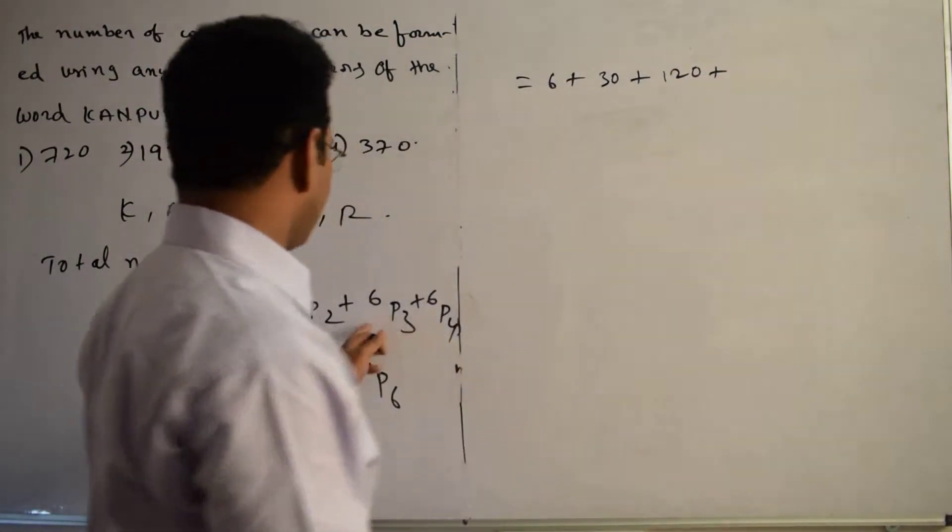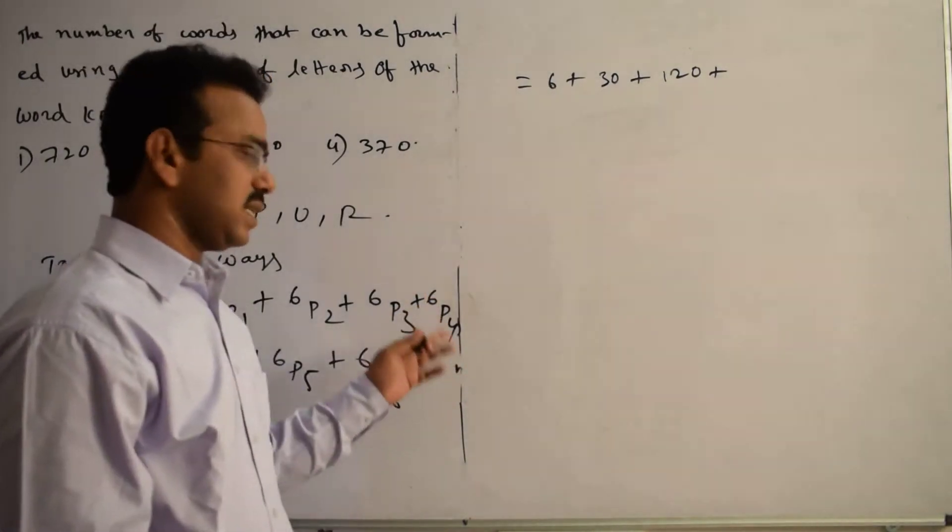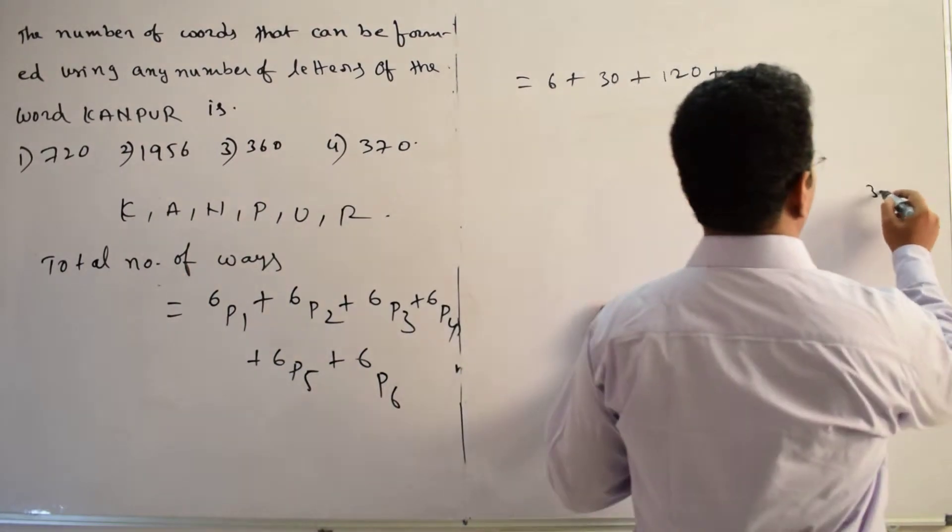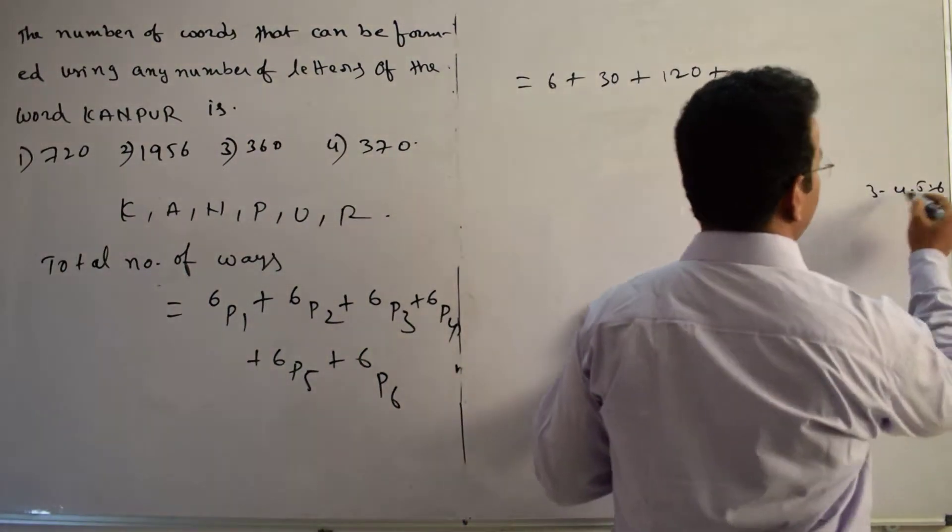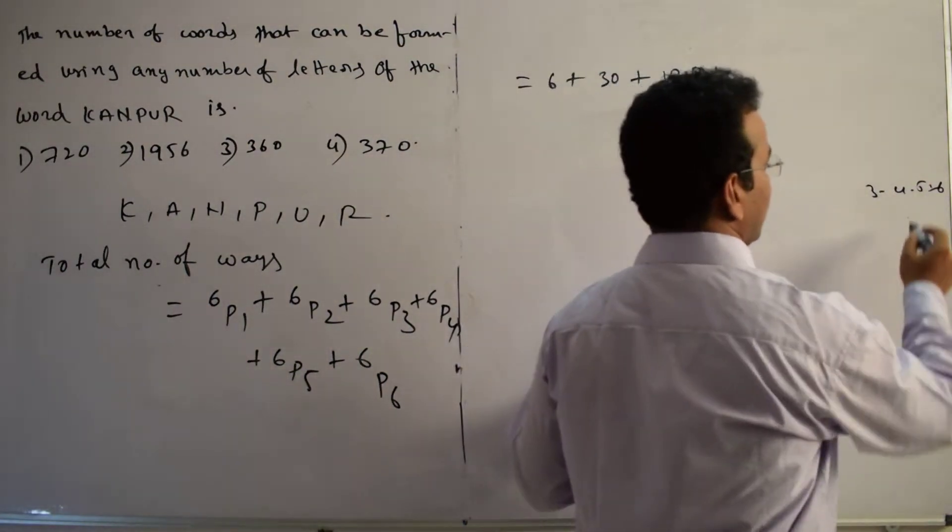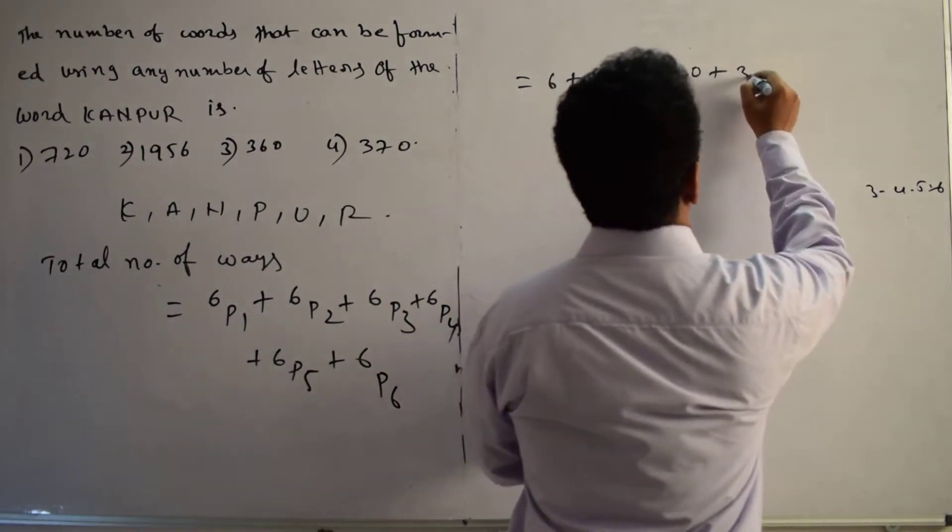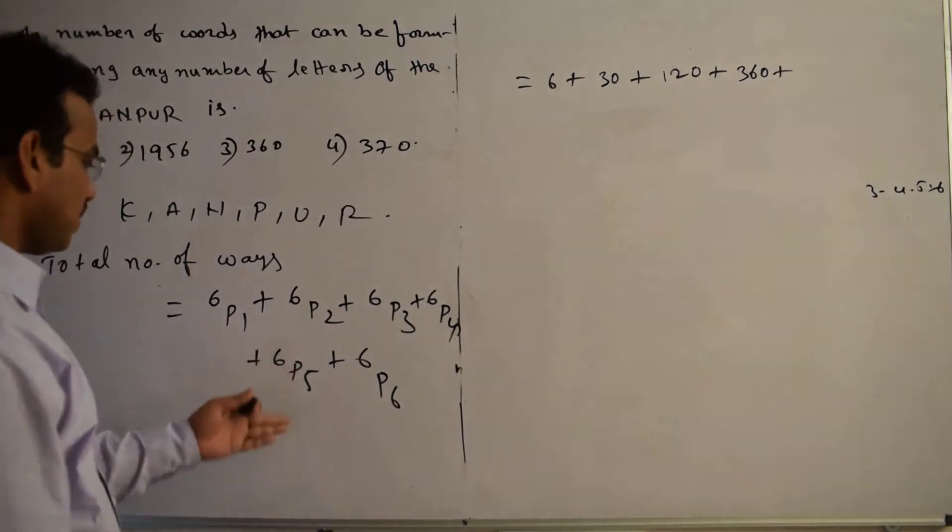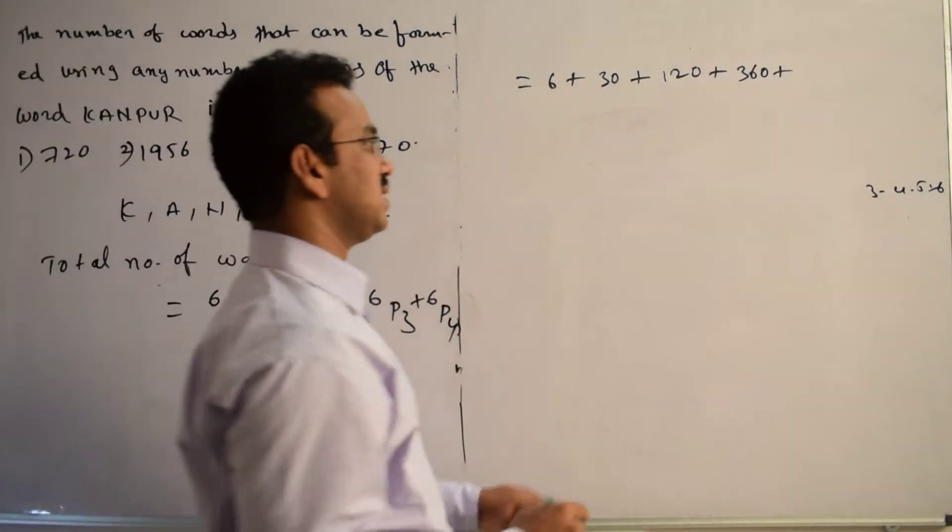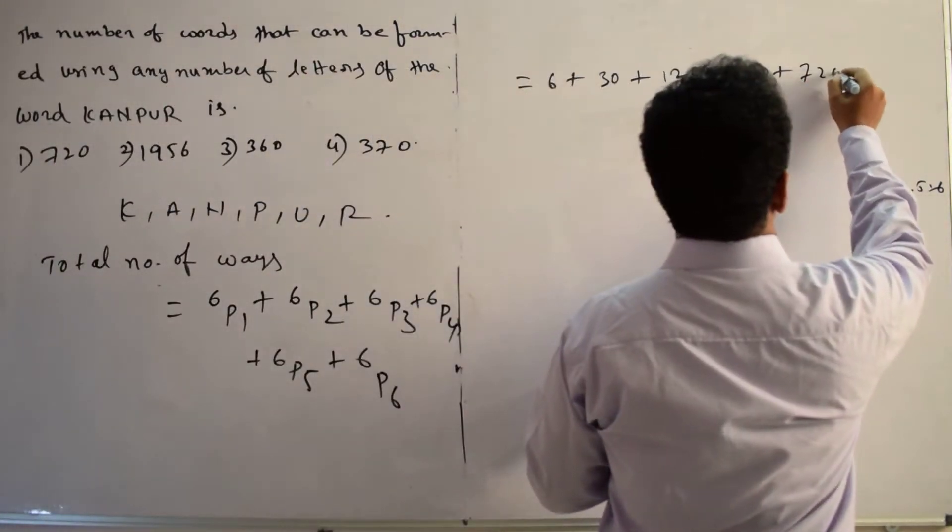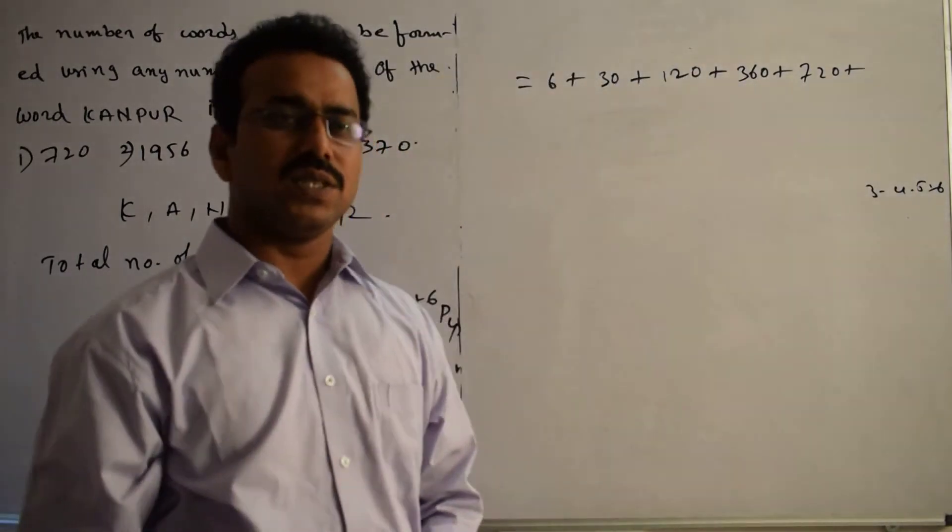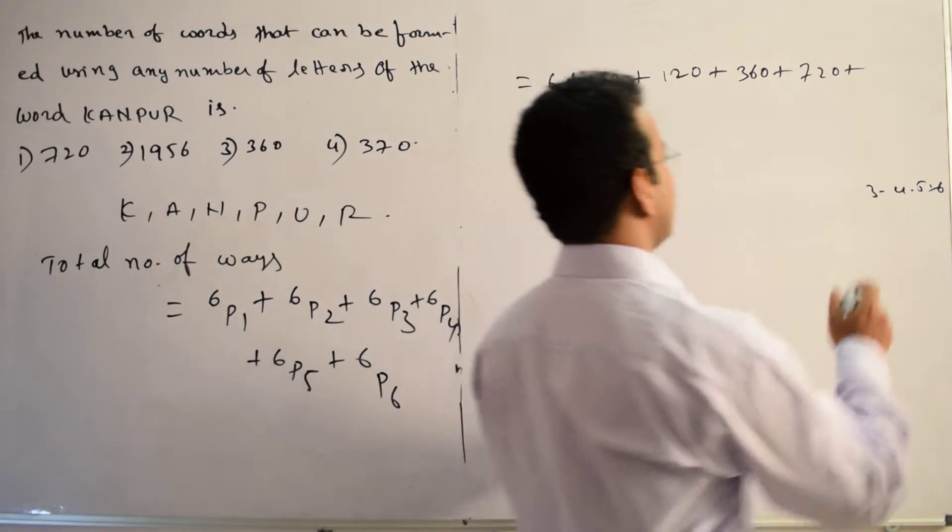Plus 6P4, 6 minus 4, 2 factorial cancels. See, 3, 4, 5, 6. 360. Plus next, 6P5, 6 minus 5 means 1 factorial, means 6 factorial, 720. Plus 6P6, means 6 factorial by 6 minus 6, 0. 6 factorial by 0 factorial means 1, 720.